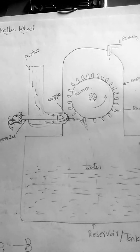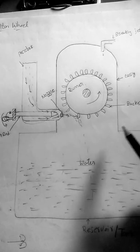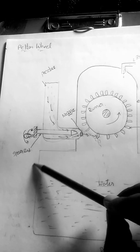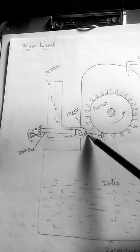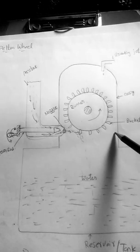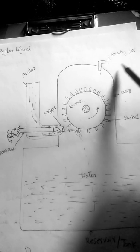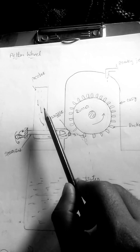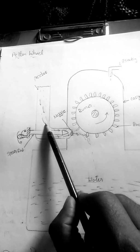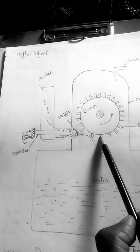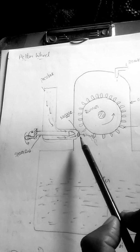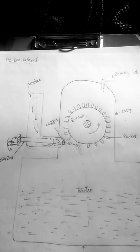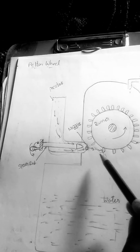This is the Pelton water wheel. We will see different components. First, this is a penstock, this is a spear rod, this is a nozzle, runner, this is a bucket, and this is a braking jet. From the penstock, the water strikes the buckets by passing through this small hole, which is the nozzle.